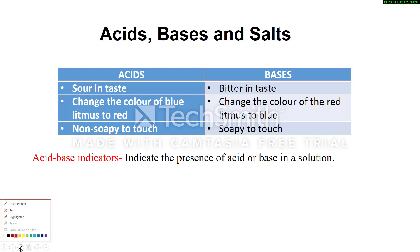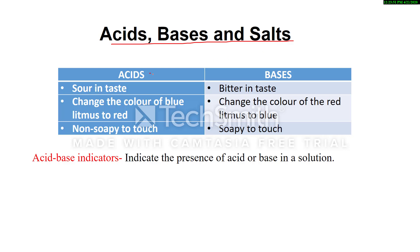Hello students, today we'll discuss the next chapter of Class 10 Science — acids, bases, and salts. In lower classes you discussed acids and bases, so let's revise them. Acids are sour in taste while bases are bitter in taste. Acids change the color of blue litmus to red while bases change the color of red litmus to blue. Bases are soapy to touch and acids are non-soapy to touch.